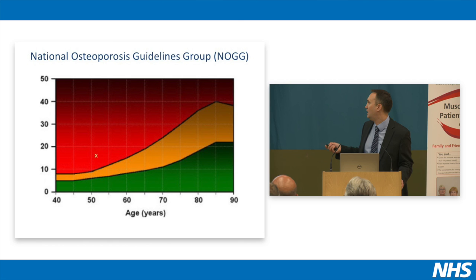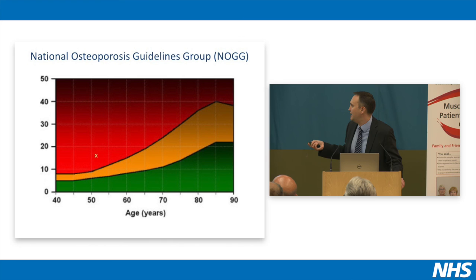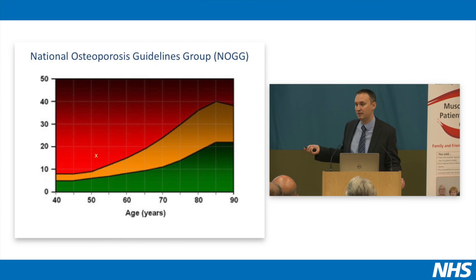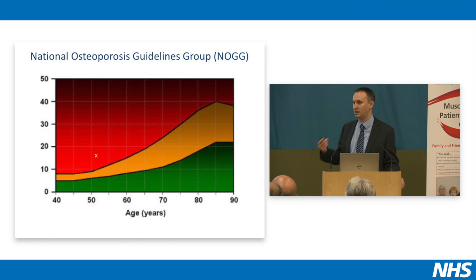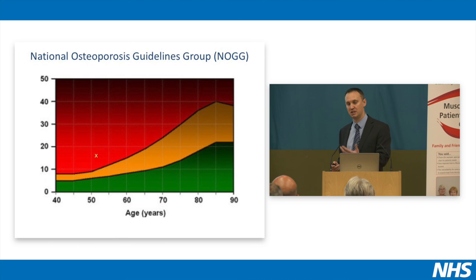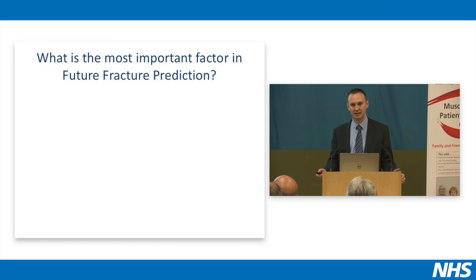We then plot that score against treatment thresholds suggested by the National Osteoporosis Guidelines Group. People who fall in the red zone — this is the 10-year risk of major osteoporotic fracture on the y-axis, and age on the x-axis — we would consider a treatment such as a bisphosphonate. If they fall in the green zone, their risk is low and we would just suggest lifestyle advice such as avoiding smoking and drinking at moderate levels. If they fall into the yellow zone, the risk is intermediate, and we would potentially do a DEXA scan to see whether they have osteoporosis or osteopenia.